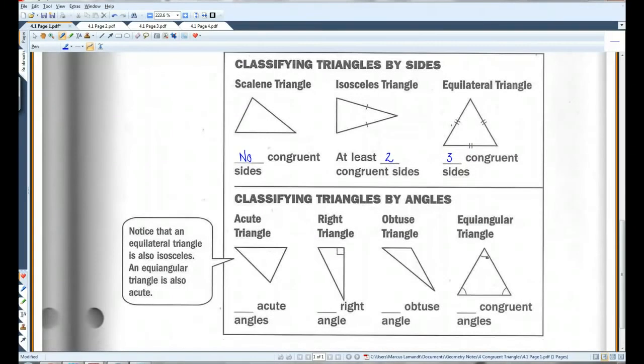When classifying triangles by angles, an acute triangle has three acute angles. All of the angles are acute. A right triangle has one right angle. An obtuse triangle has one obtuse angle. An equiangular triangle has three congruent angles, all congruent angles.